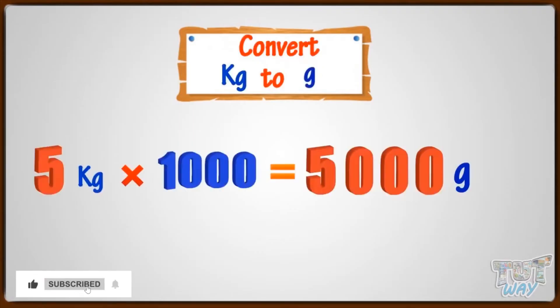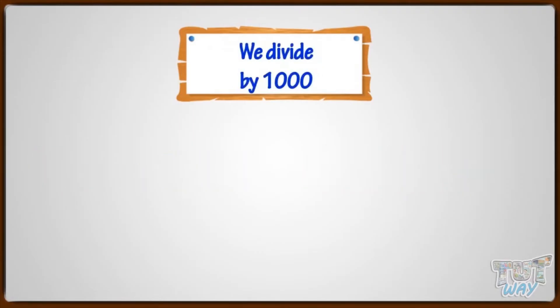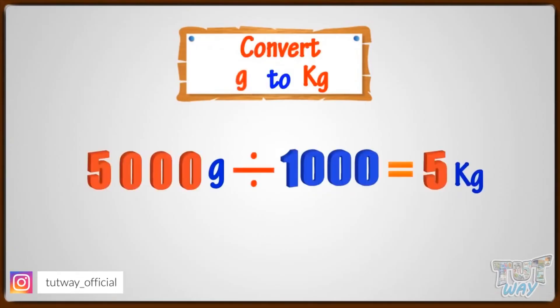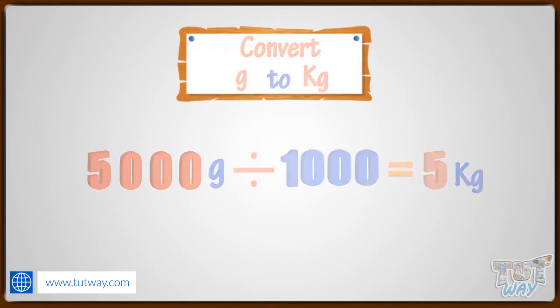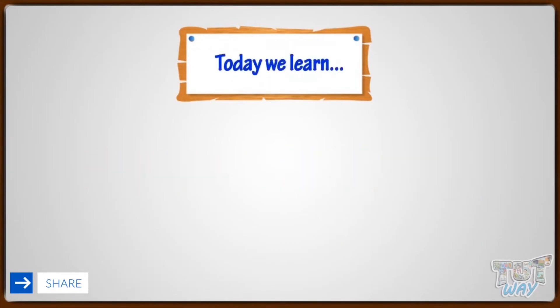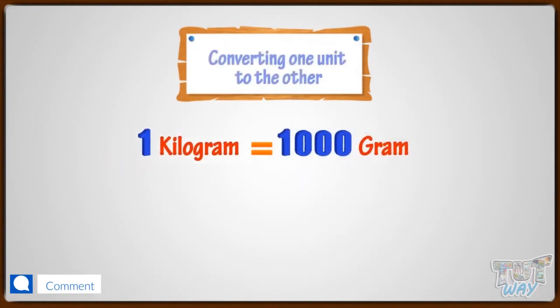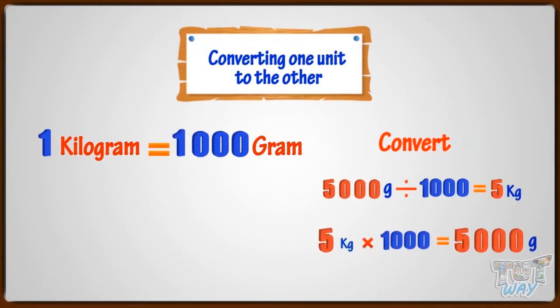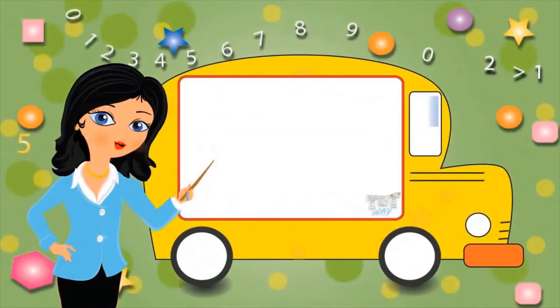So, kids, we multiply with 1,000 if we want to convert kilograms to grams and we divide by 1,000 if we want to convert grams to kilograms. So, kids, today we learnt very important units of measurement and converting one unit to the other. Now, go ahead and take a quiz to learn more!